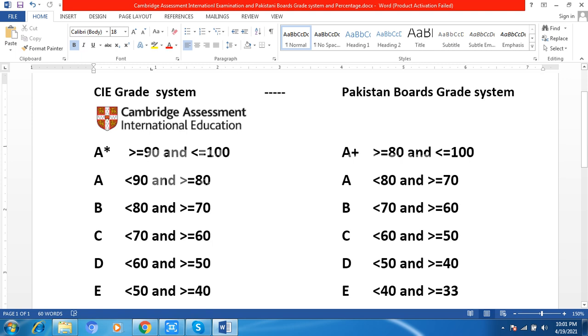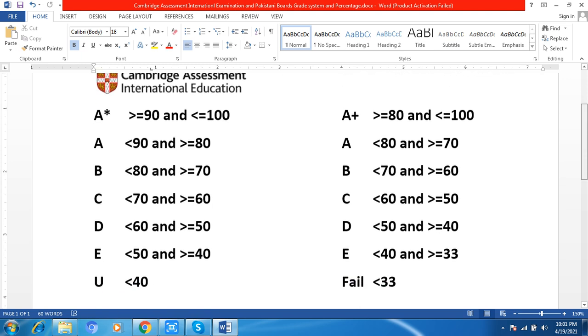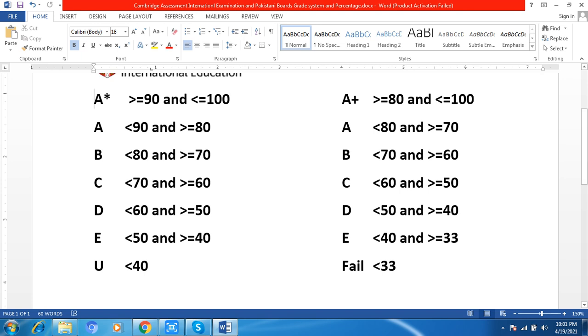For D grade, less than 60 and greater than or equal to 50. For E grade, less than 50 and greater than or equal to 40. And U grade for less than 40, it will be ungraded.